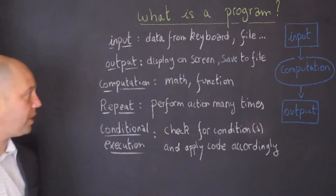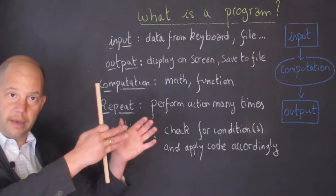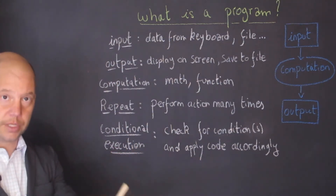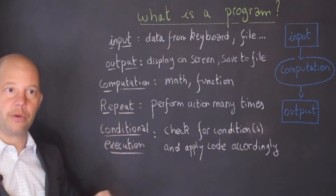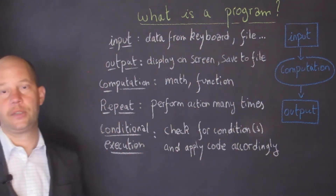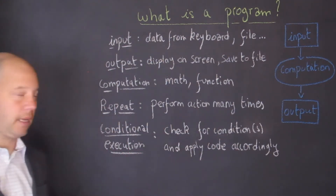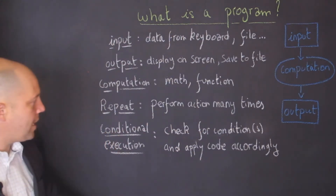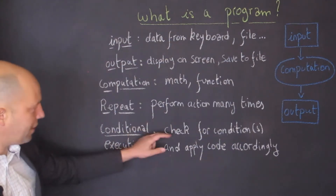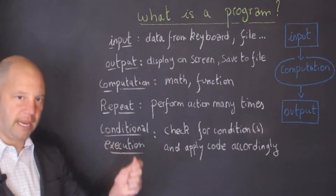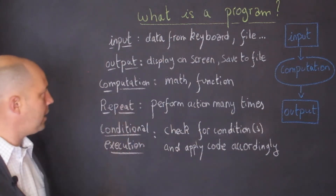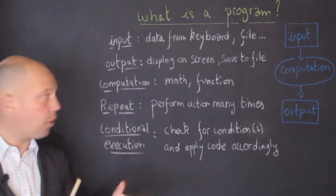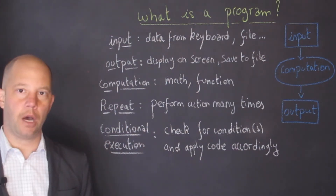Sometimes we need to perform an action many times. For example, if you have an Excel file with temperatures in Fahrenheit and need to convert them to Celsius, you go row by row applying a function — that is why we use loops. We also have conditional execution: we check for a specific condition, and if that condition is met, we apply the code accordingly. This forms the basic structure of a program.